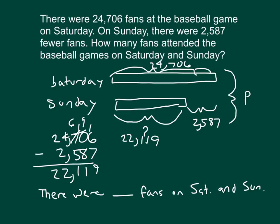Let's see if that amount is reasonable. 2,587 fewer is about 3,000 fewer. The amount on Saturday was 24,706, which is about how many thousand? 25,000. So, if we subtract those two amounts, that gives us about 22,000, which is very close to my actual answer for the attendance for Sunday.